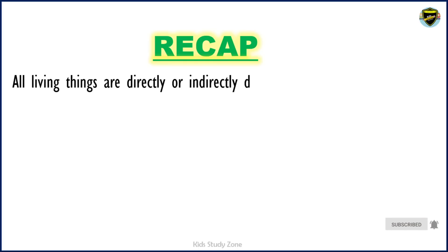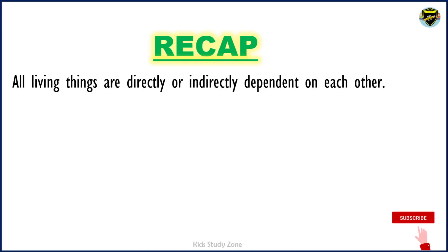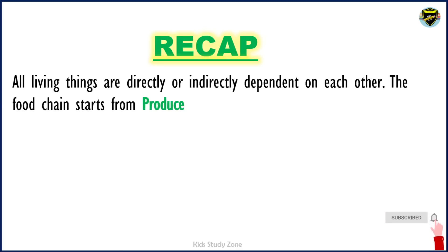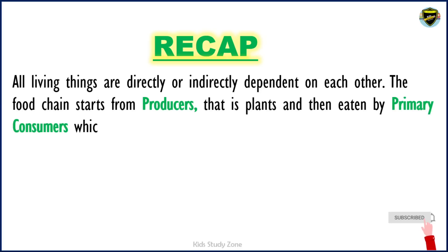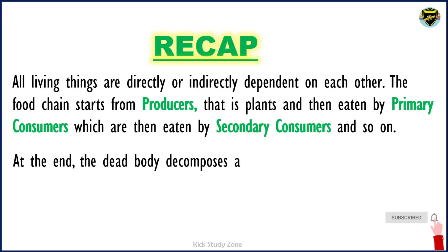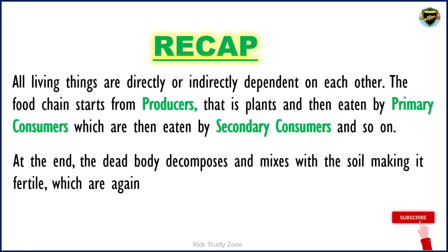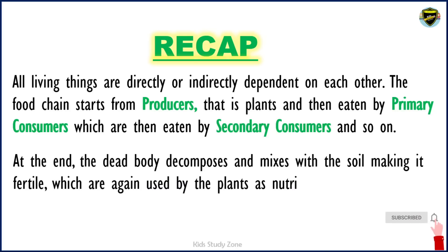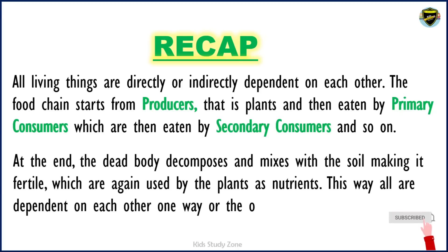All living things are directly or indirectly dependent on each other. The food chain starts from the producers, that is plants, and then they are eaten by the primary consumers, which are then eaten by secondary consumers and so on. At the end, the dead body decomposes and mixes with the soil, making it fertile, which is again used by the plants as nutrients. This way, all are dependent on each other in one or the other way.